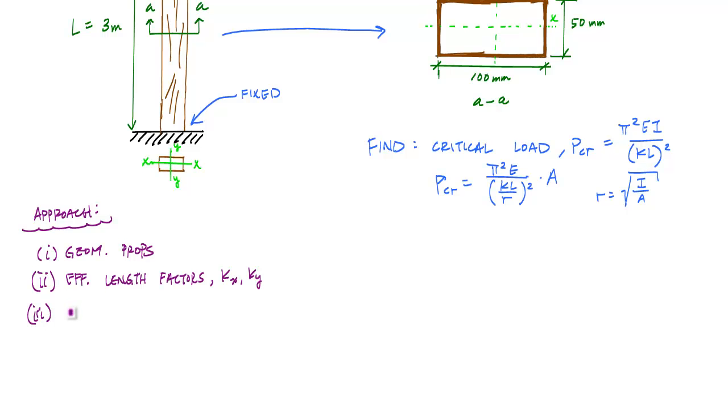The next thing we want to do is determine the governing slenderness ratio. And that is essentially KL over R, which is the effective length divided by the radius of gyration. The governing slenderness ratio is the maximum slenderness ratio. And then the last but not least is to determine the actual critical load using the Euler buckling formula.